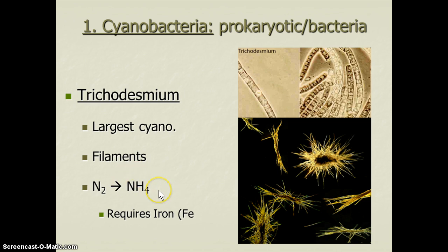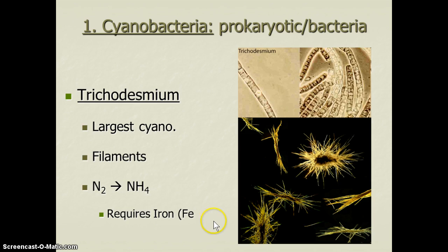This is fixing nitrogen, just like carbon fixation. So trichodesmium is doing both — they're a photosynthesizer and a phytoplankton, so they're fixing carbon, but they're also fixing nitrogen. Iron is a very large requirement for both nitrogen fixation and for photosynthesis, so it's an important element for these organisms.